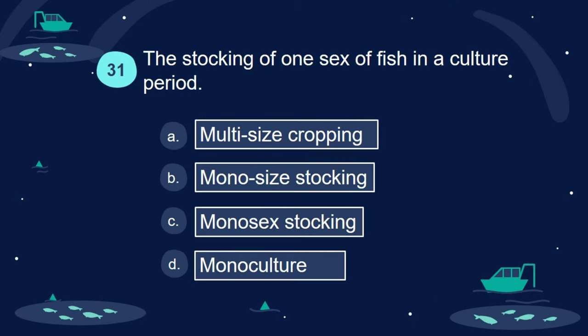Question 31. The stocking of one sex of fish in a culture period: A. Multi-size cropping. B. Mono-size stocking. C. Monosex stocking. D. Monoculture.